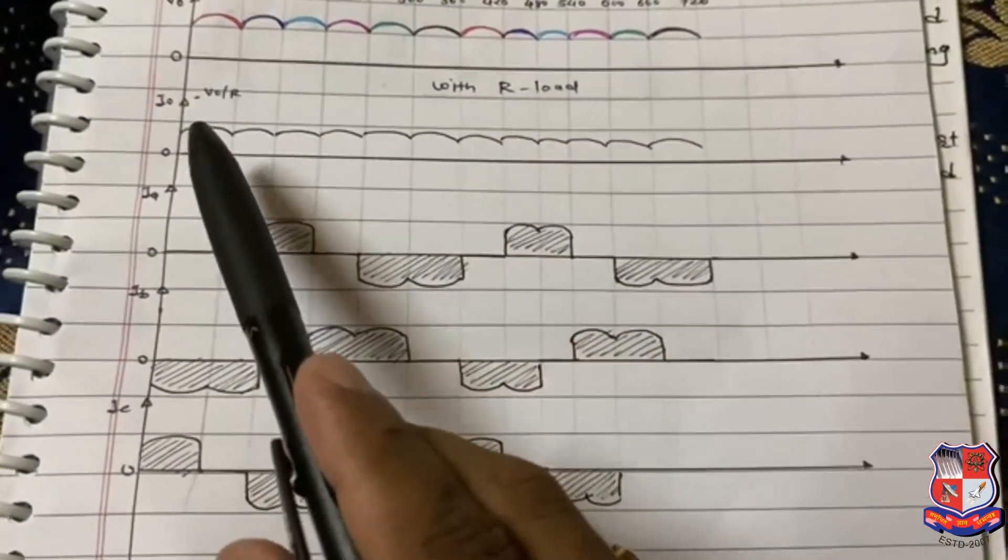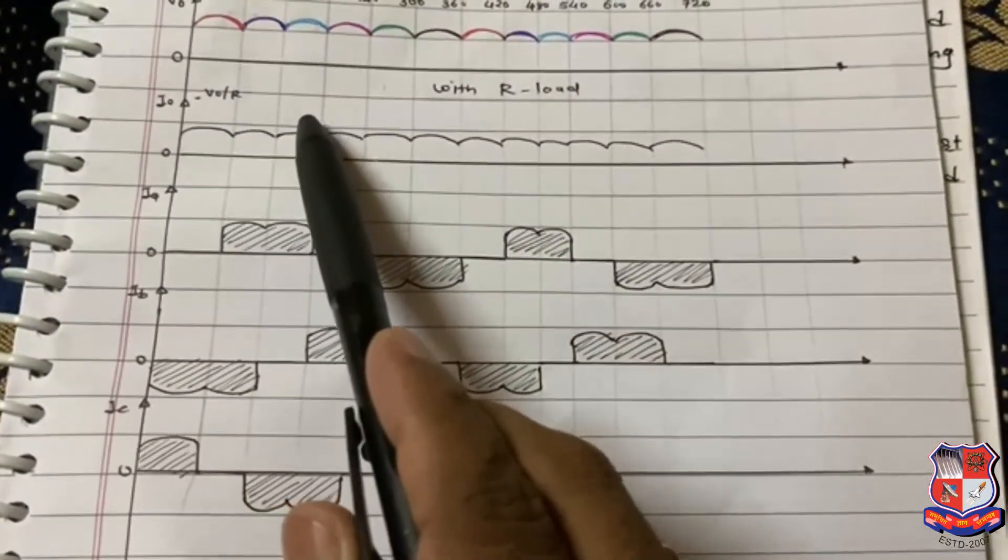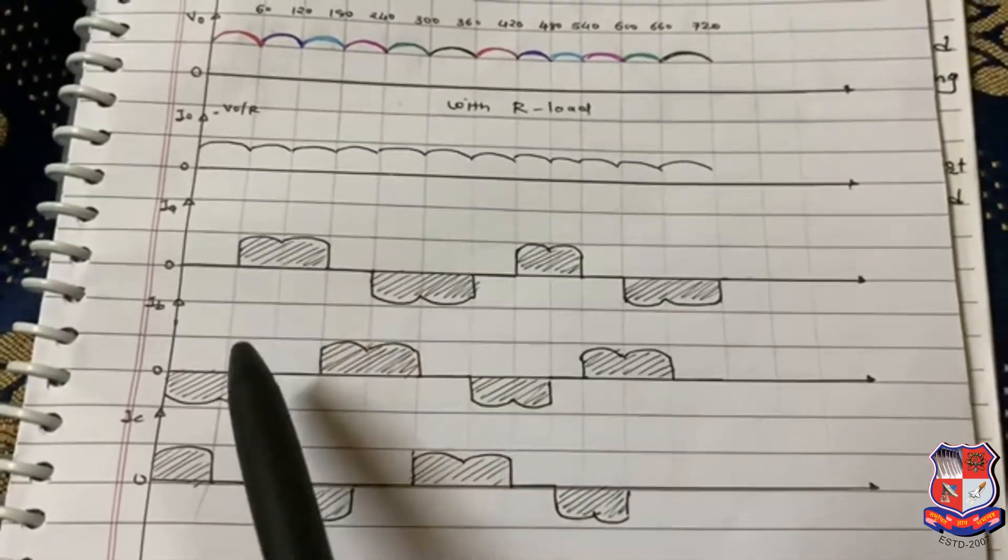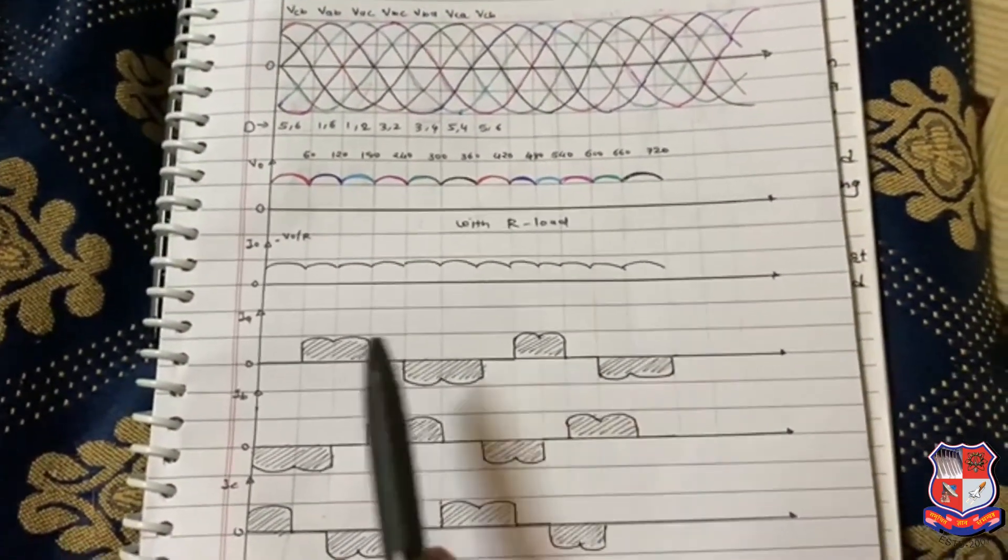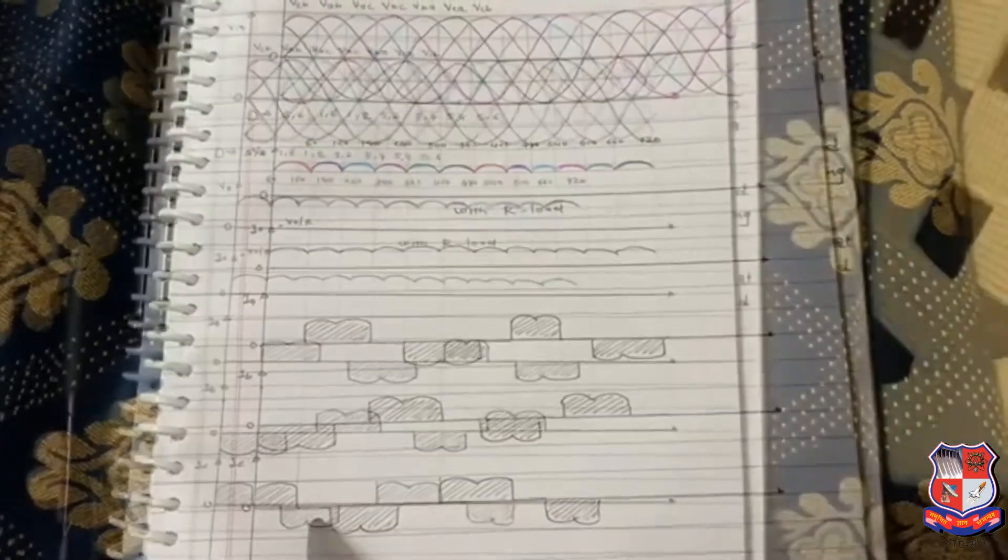Now this output current I0 is the summation of Ia, Ib, and Ic, which are the line currents of the particular phases.